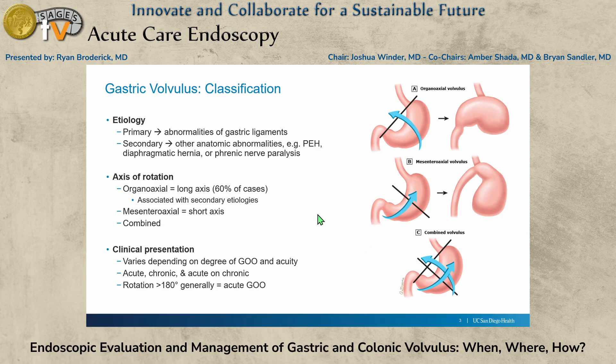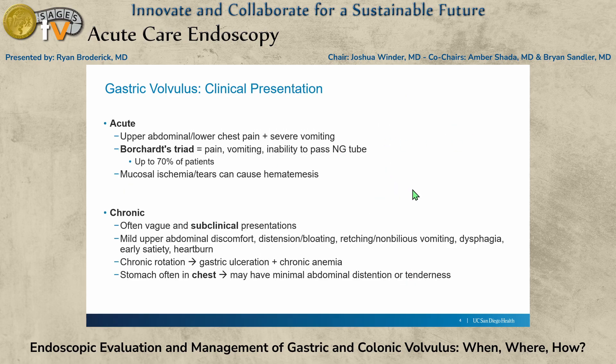The clinical presentation varies depending on the degree of gastric outlet obstruction, and you have acute, chronic, and acute on chronic. We'll focus mostly on the acute phases here, given this acute care surgery discussion. Elderly patients come in through the ER with the inability to swallow, abdominal pain, and chest pain. Borchardt's triad: pain, vomiting, and the inability to pass the NG tube — that's up to 70% of our patients in the acute phase.